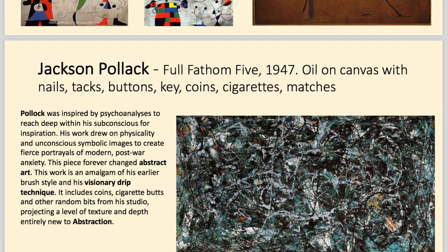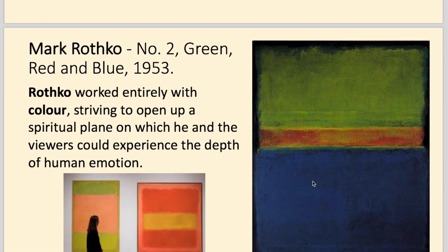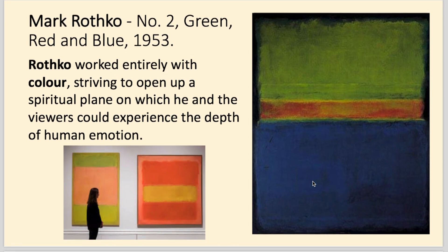Jackson Pollock, in the 1940s, started creating very dynamic, very textured paintings. He added all sorts of things — like coins, cigarette butts and other random bits from his studio. He became known for this style where you can throw the paint, and it's a true expression of movement — the technique itself creates the feeling of the painting. Mark Rothko was really interested in colour and how it affects our emotions. His paintings are massive, and you can walk into a space and be immersed in the simple colours he creates, experiencing the mood he's trying to portray.